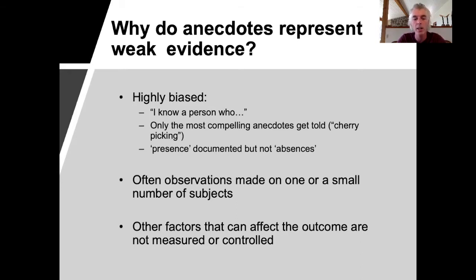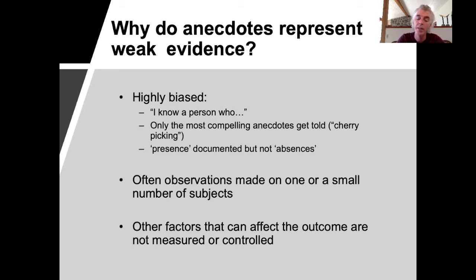When a child develops autism following a vaccination, that's very dramatic to parents who experience that. But for parents whose children don't develop autism following a vaccination, we don't give it much thought. As a result, there's a bias towards the presence of patterns and we have very little, if any, information on the absence of relationships between the two things we might be observing.